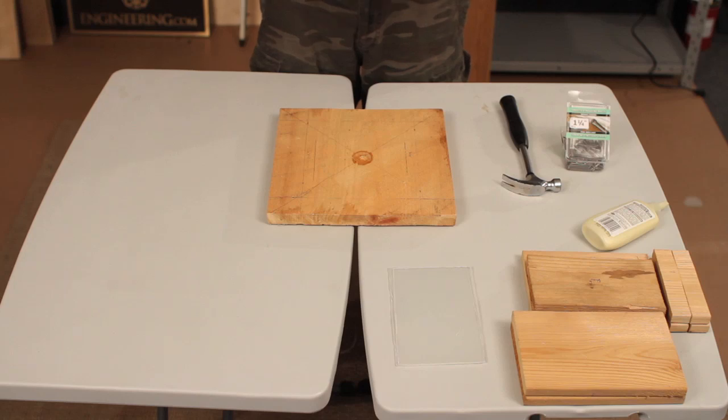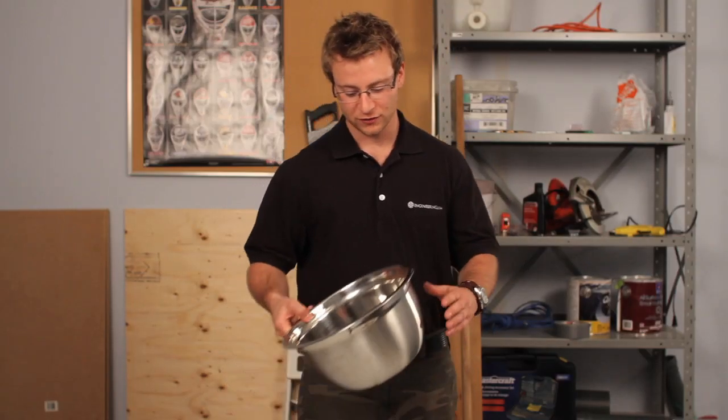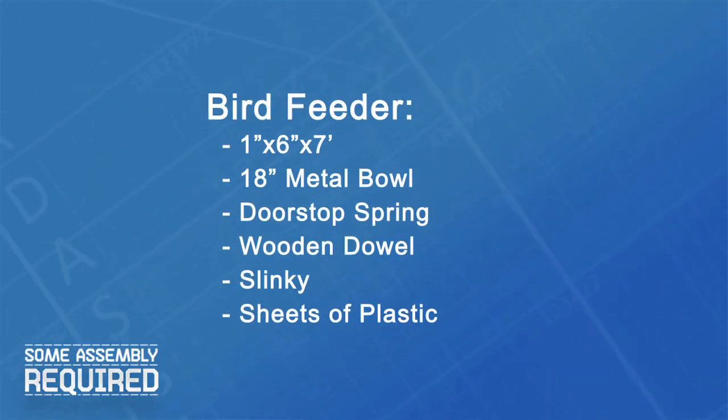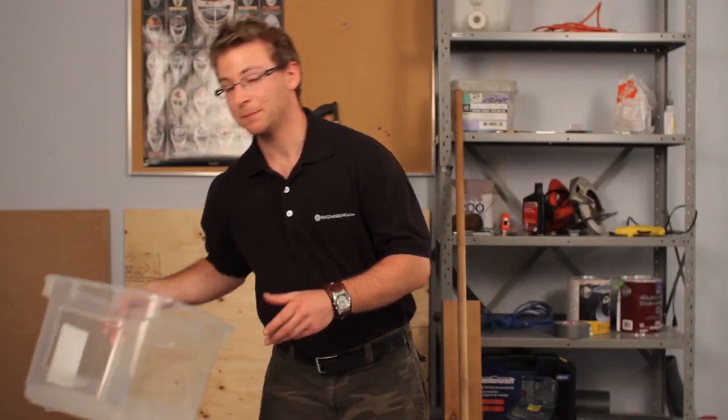I've already cut all the pieces that we'll need to get started for this next part. They came from a 7 foot long 6 by 1 inch board and a sheet of plywood. We'll also need an 18 inch diameter metal bowl, a metal door stopper spring, our stand, everyone's favorite slinky, and a couple sheets of plastic.